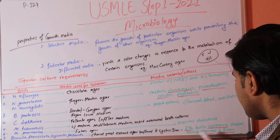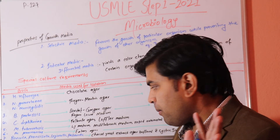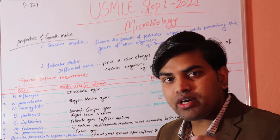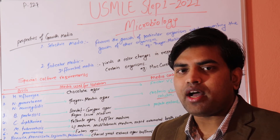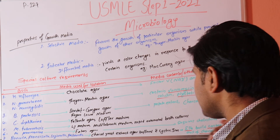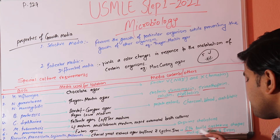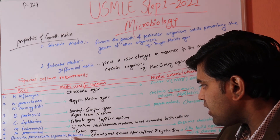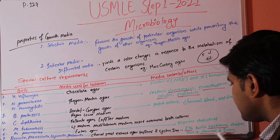To remember the 'ella' bacteria (Brucella, Francisella, Legionella, Pasteurella) and their special culture requirements, use the mnemonic: 'Ella built a cystine chapel out of charcoal and iron.' These organisms require charcoal yeast extract agar with cystine and iron for growth. All four 'ella' bacteria share this requirement.